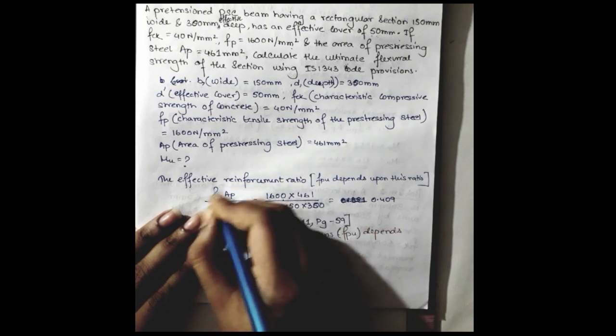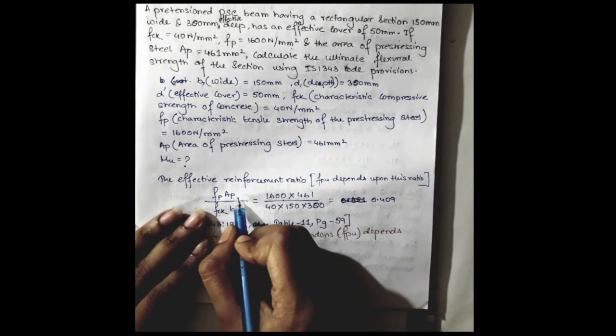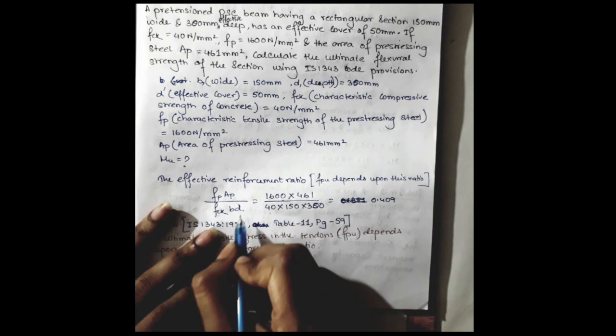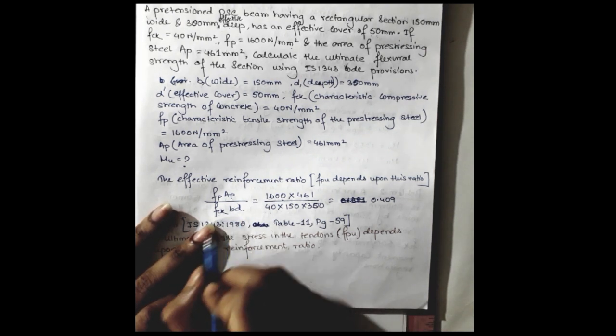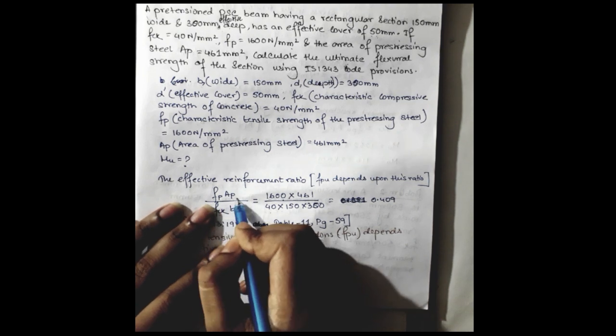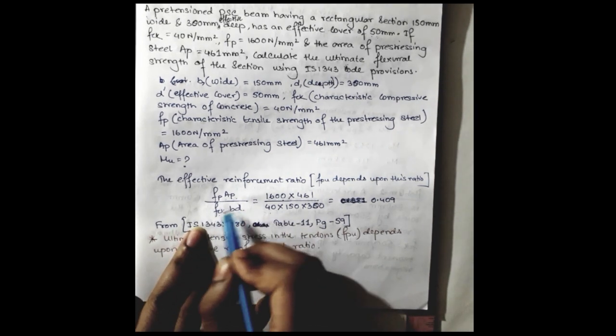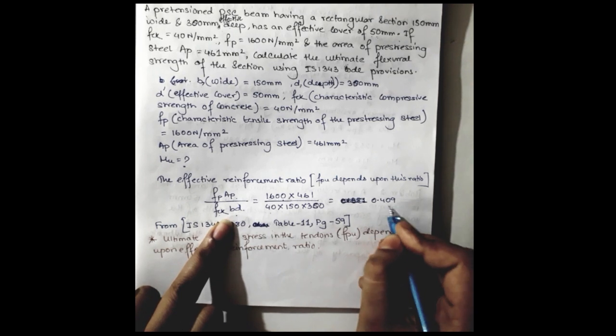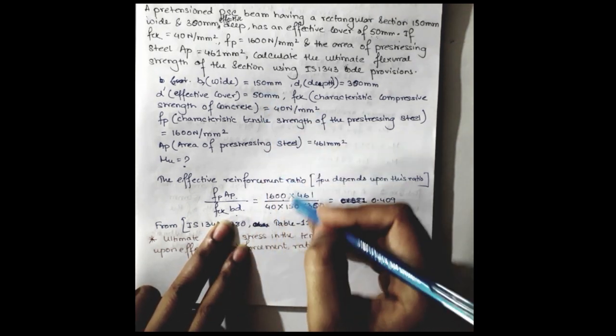This contributing factor of the steel and this contributing factor of the concrete is providing me this ratio. After putting the concerned values where fp is 1600 Newton per millimeter square, Ap is 461 millimeter square, fck is 40 Newton per millimeter square, b is 150 and d is 300.